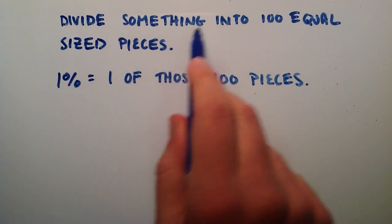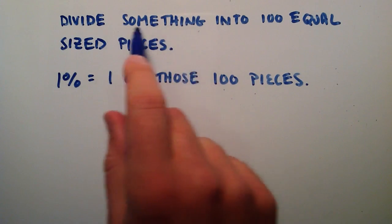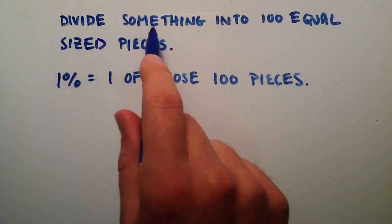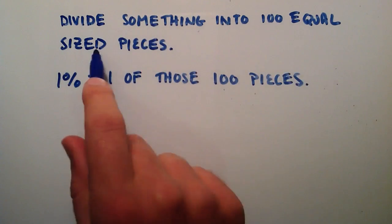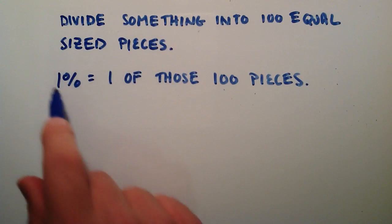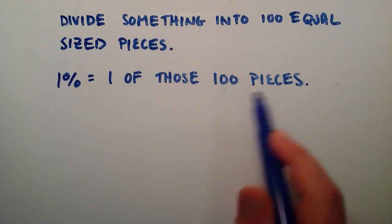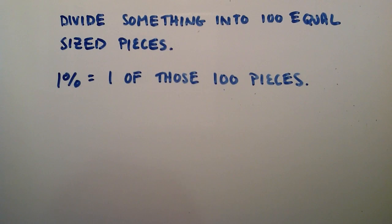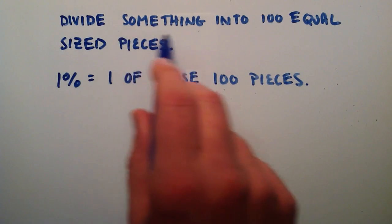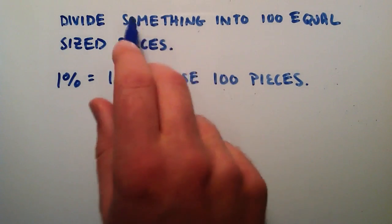Well let's say that we have some object of interest, we're just going to call it something for now. And we divide that something into 100 equal sized pieces. Well 1% means that we have one of those 100 pieces. So what exactly does that tell us about percentages? Well what it tells us is that a percent changes value depending on what our object is, depending on what something we have.